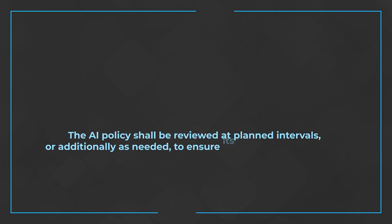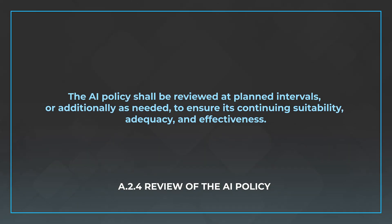The last control is A.2.4, review of the AI policy. This one's pretty straightforward — the AI policy shall be reviewed at planned intervals and additionally as needed to ensure its continuing suitability, adequacy, and effectiveness. Essentially, determine a cadence for when you're going to review that policy. I would recommend more often when you first implement this policy, and also when you make any material changes that may affect that policy, you need to re-review and probably re-ratify it.